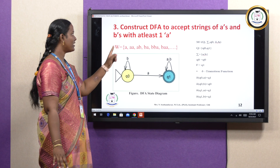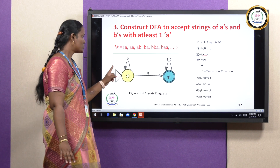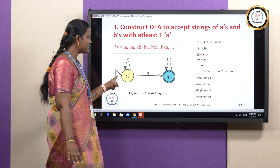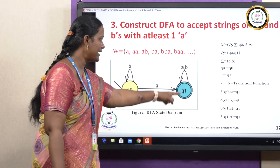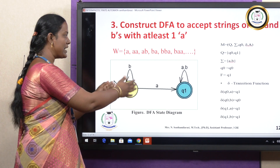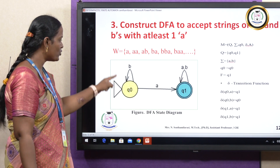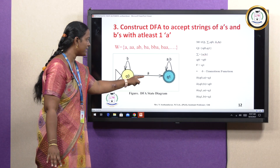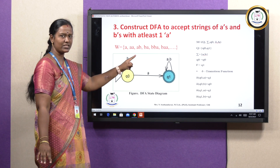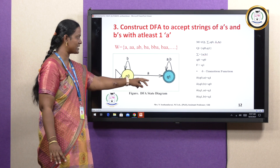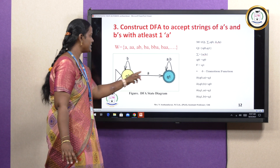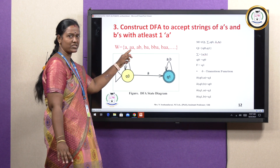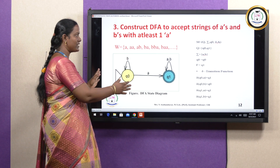Drawing the state diagram: from Q0, on input A it moves to Q1 which is the final state. On input B from Q0, it stays at Q0 as a self-loop — for example, BA is accepted since it contains one A. From Q1, on both A and B as inputs it stays at Q1 as a self-loop — since once at least one A has been seen, the string remains accepted regardless of further input. So AA and AB are both accepted.